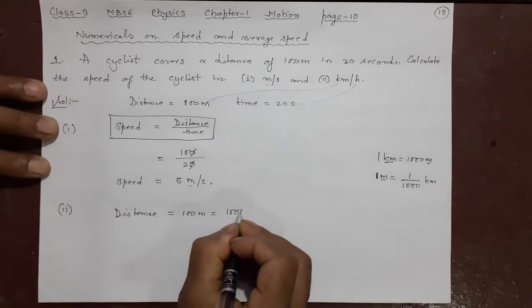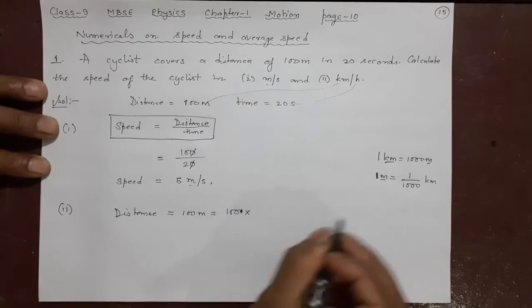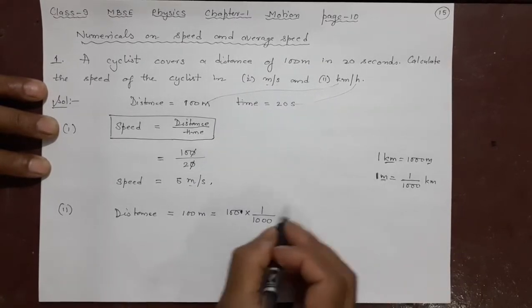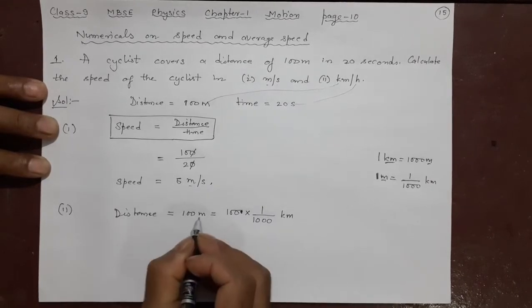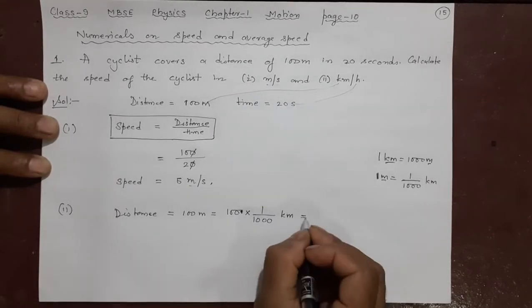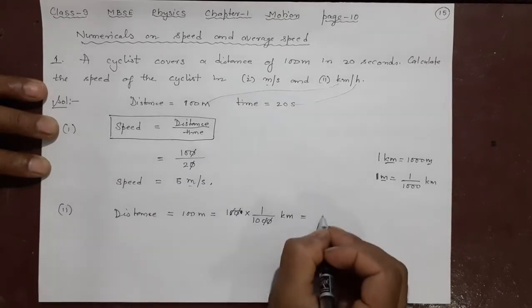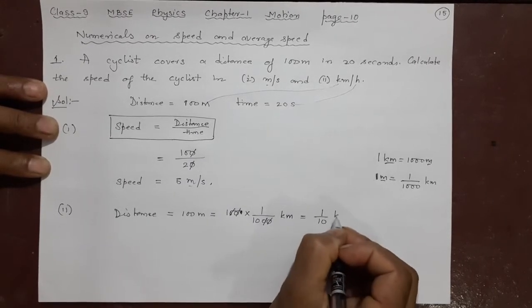So, 100 into 1 by 1000. Now meter becomes kilometer. Here, meter becomes kilometer. What is this? Cancel. Cancel. 1 by 10 kilometer.